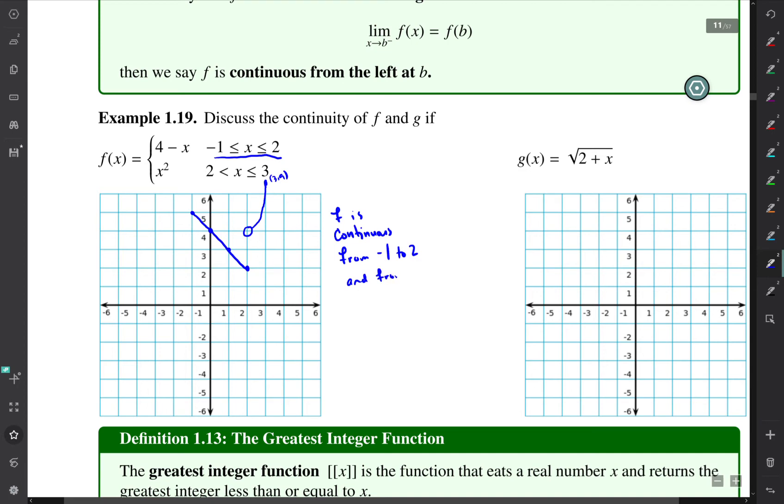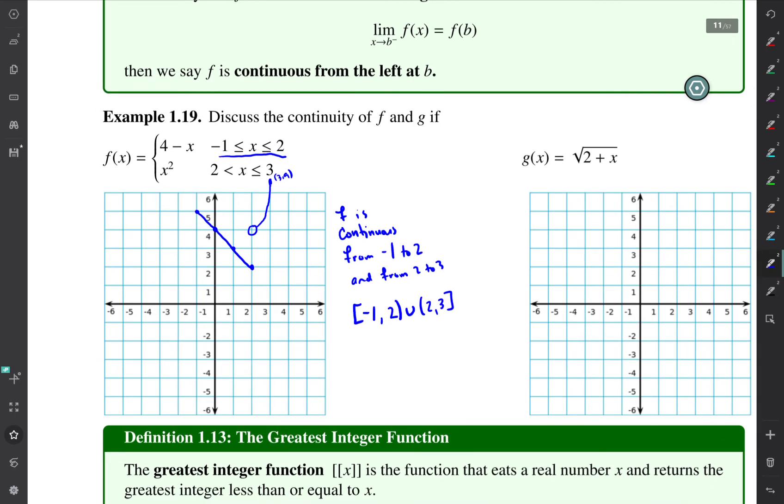And if we were to do this in interval notation, we would say it's continuous from negative 1 comma 2, not including 2 because there's a jump discontinuity at x equals 2, but then from 2 all the way up to 3. And it's continuous at both endpoints mainly because the right and left hand limits is actually equal to the function at those points.